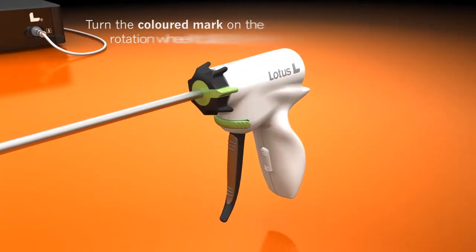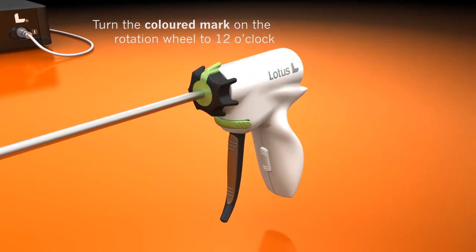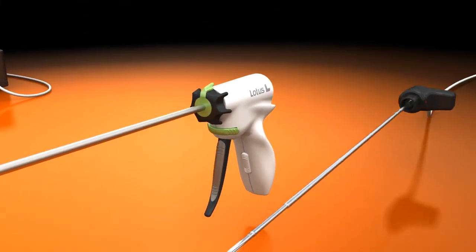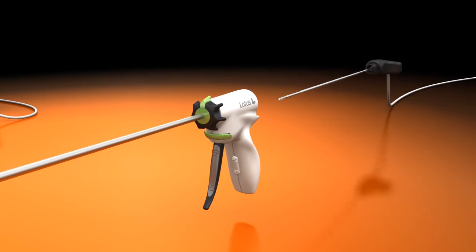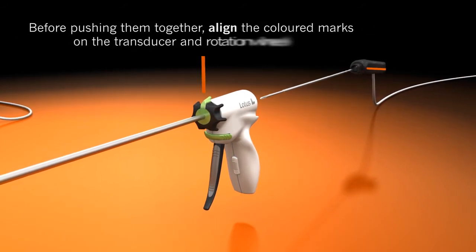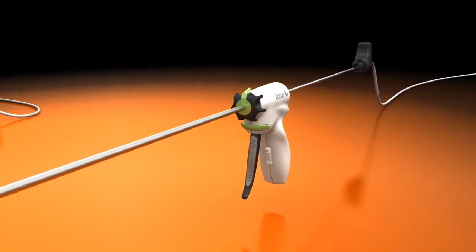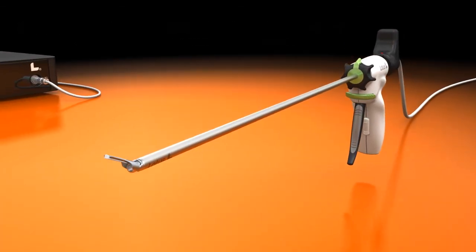Turn the coloured mark on the rotation wheel to 12 o'clock. Open the jaw of the handpiece. Ensure that the coloured marks on the transducer and rotation wheel are aligned. Push the transducer and handpiece together until the stop.